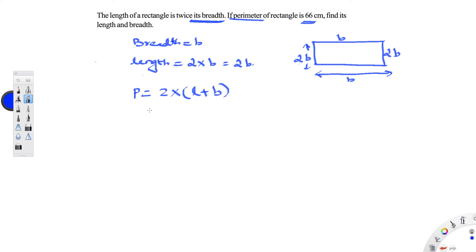Now length is 2b they have given, so 2 into length is 2b plus b equal to 66. The perimeter they have given, p is equal to 66 cm, so it is 66.